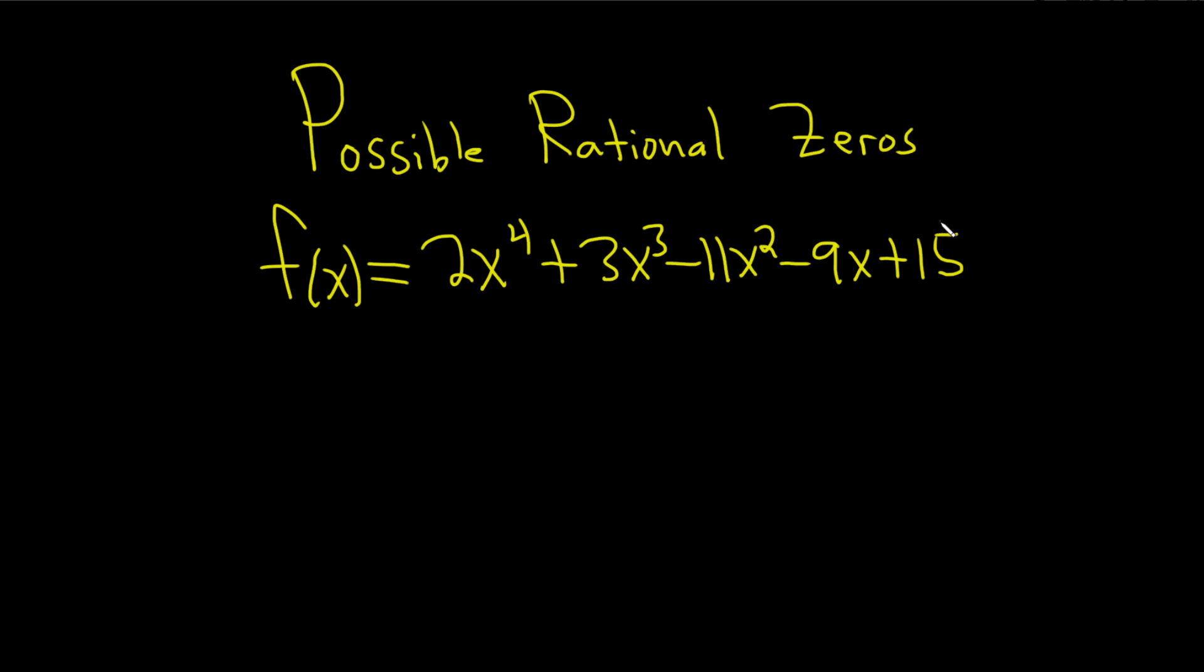The way you do this is you look at the factors of this number over here, divided by the factors of this number here. So it's factors of the constant term over factors of the leading coefficient.